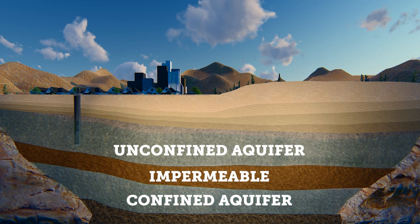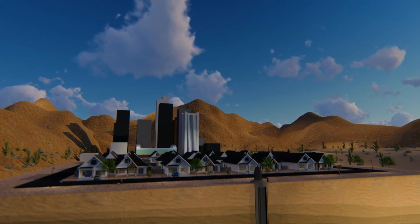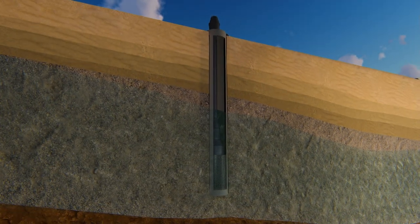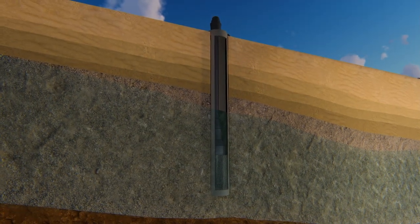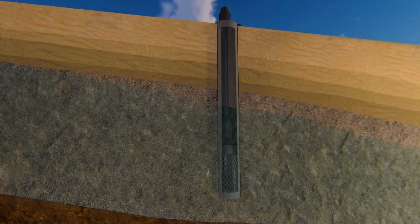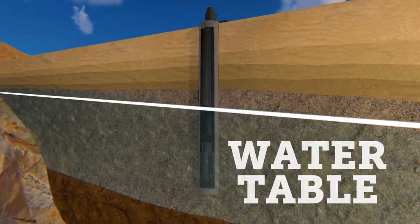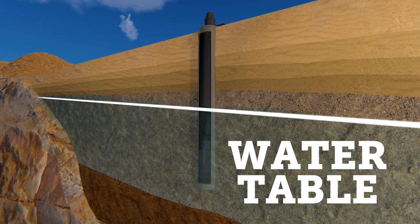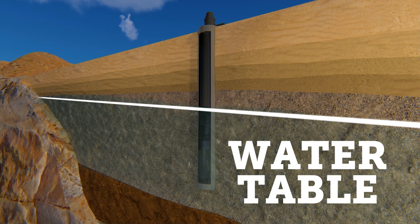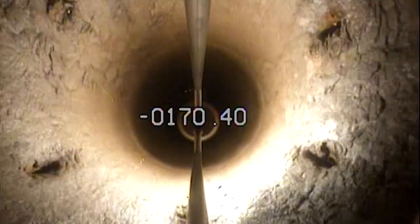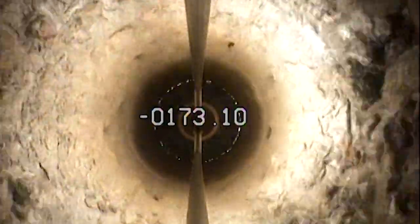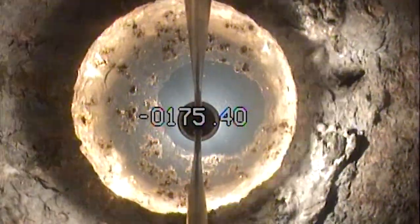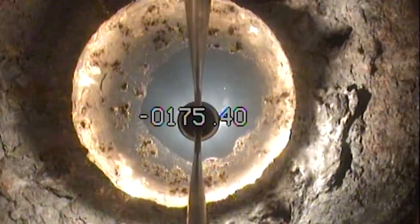Within the aquifer, we use wells to figure out where the water is below the ground. In an unconfined aquifer, we call this level the water table. Below the water table, the ground is fully saturated with water. The water table can be close to the surface or hundreds of feet below.